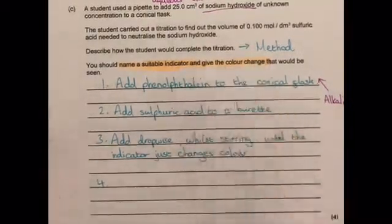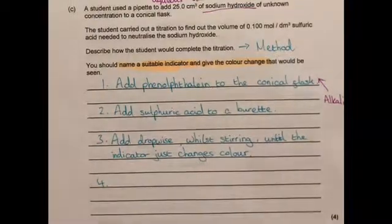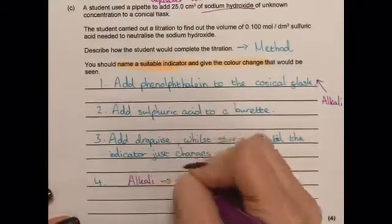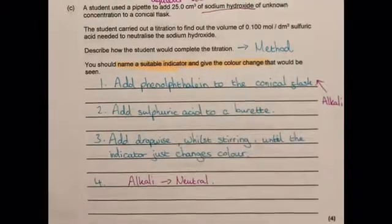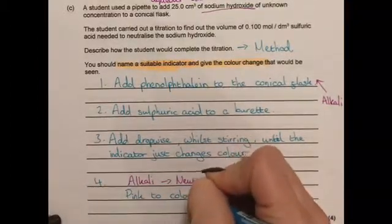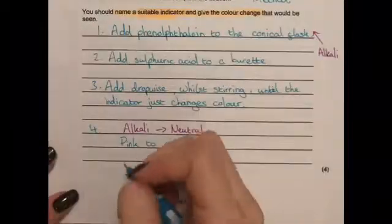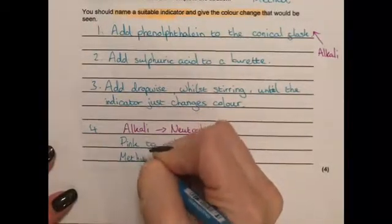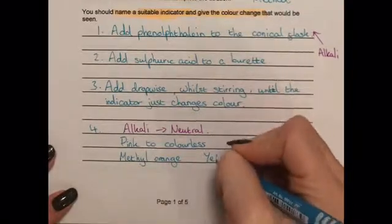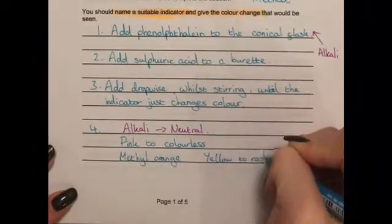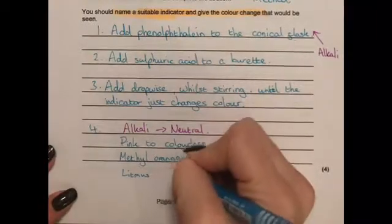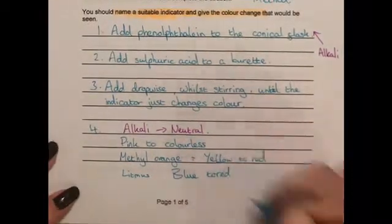And then four is to give the colour change that would be seen at that end point of that titration or when your alkali is just neutralized. So like we said we're going from an alkali we're neutralizing it. So if we're using phenolphthalein that's going to go from pink to colourless. Now you could also use methyl orange which would turn from yellow in alkali to red or you could use litmus which again would turn from blue in alkali to red.